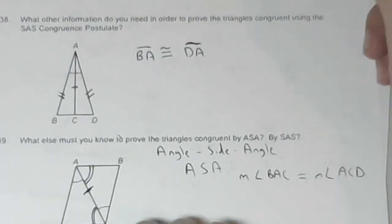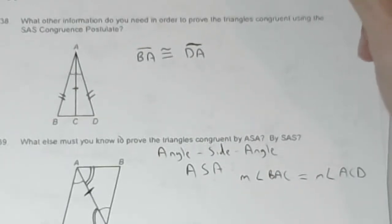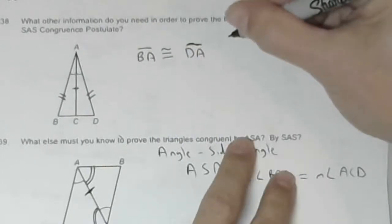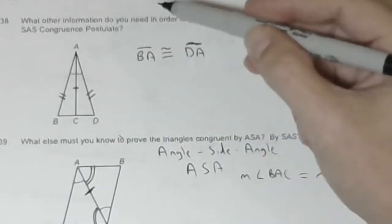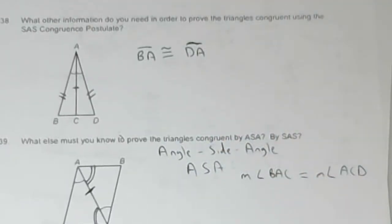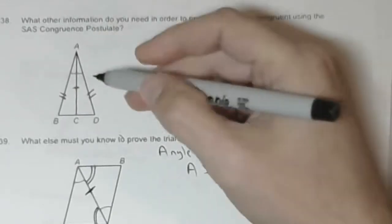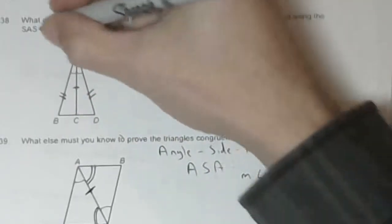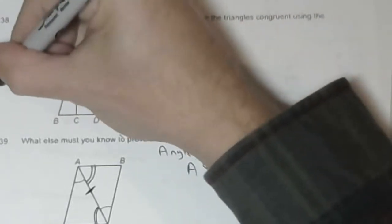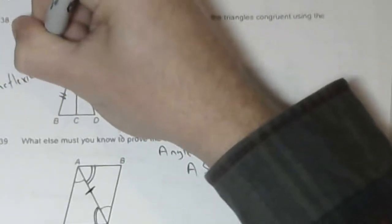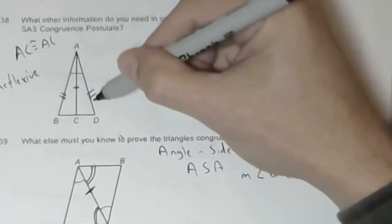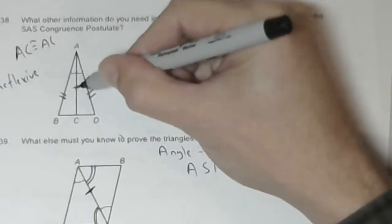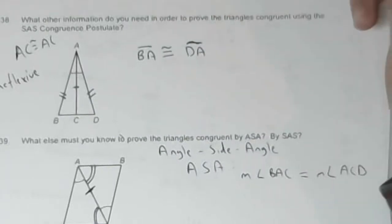What other information do you need in order to prove the triangles congruent using SAS congruence postulate? SAS is side angle side. So these angles are marked. What I am going to do is mark AC equal to AC, that's reflexive property of congruence. If I know that segment BA is congruent to segment DA, then I will have two sides and the included angle, which is SAS.